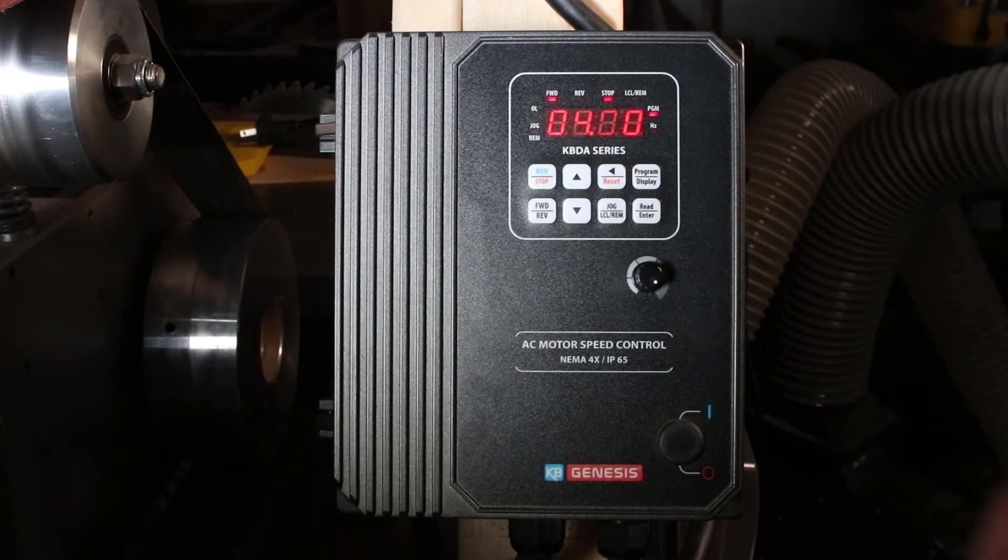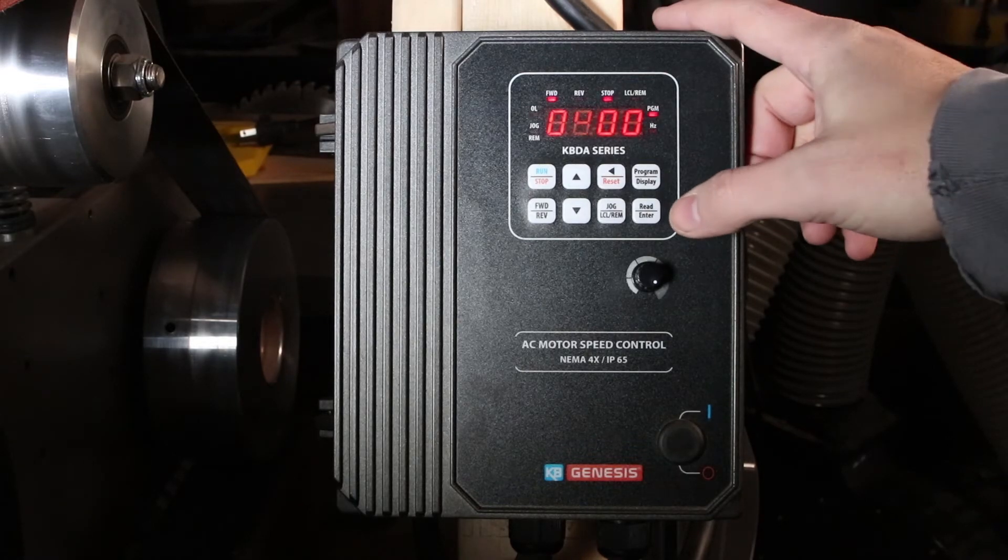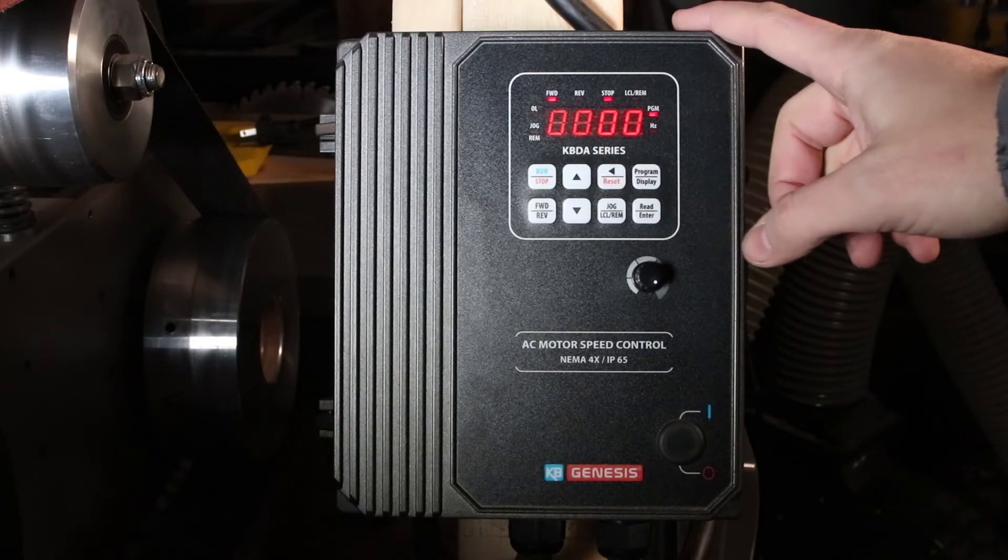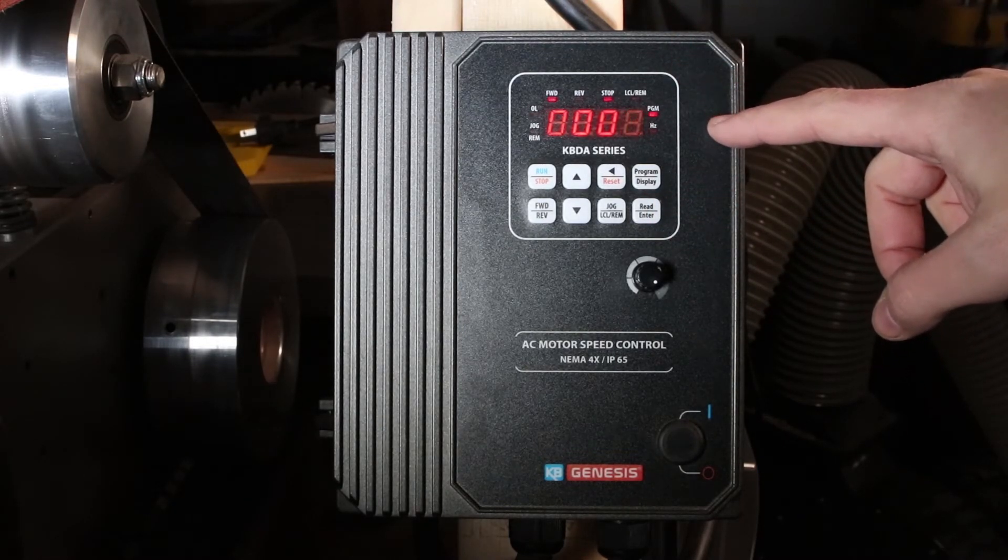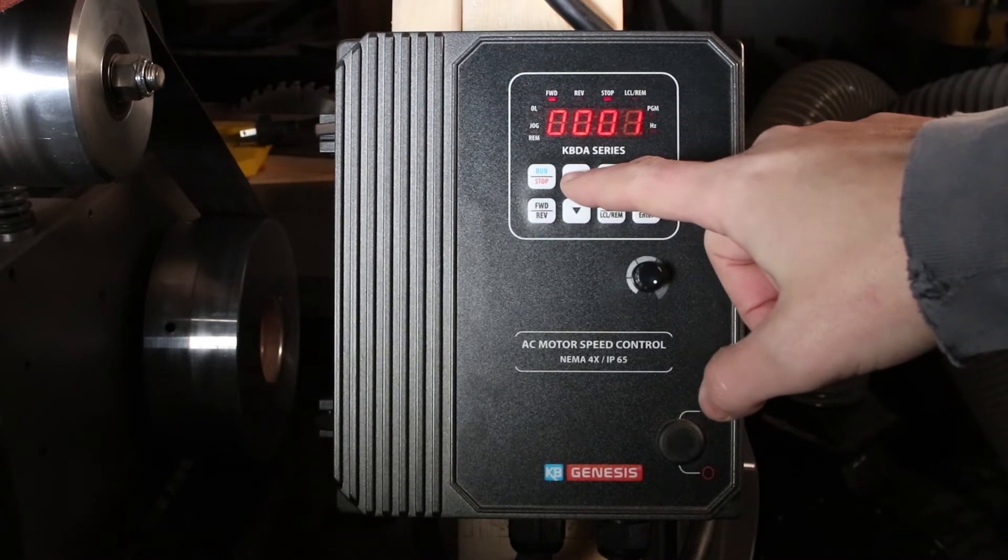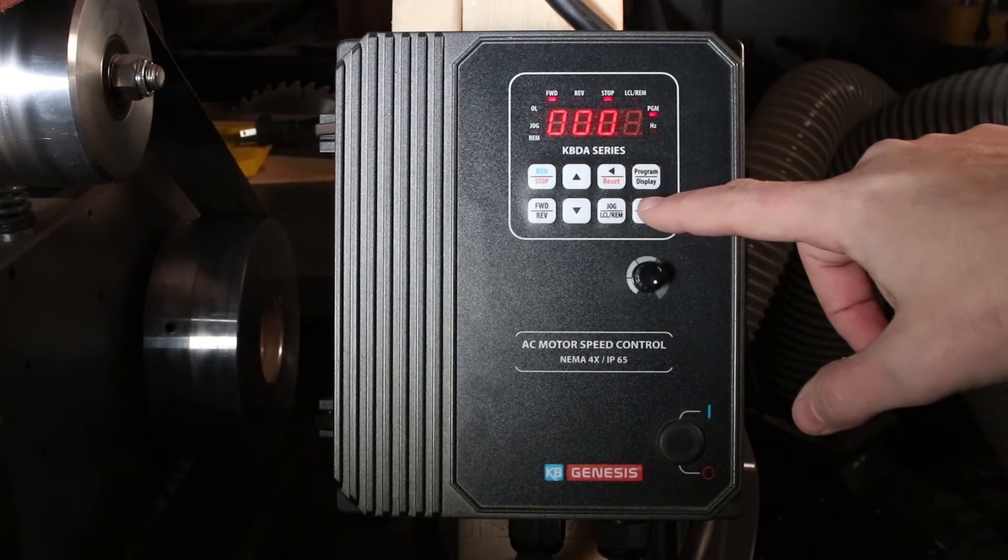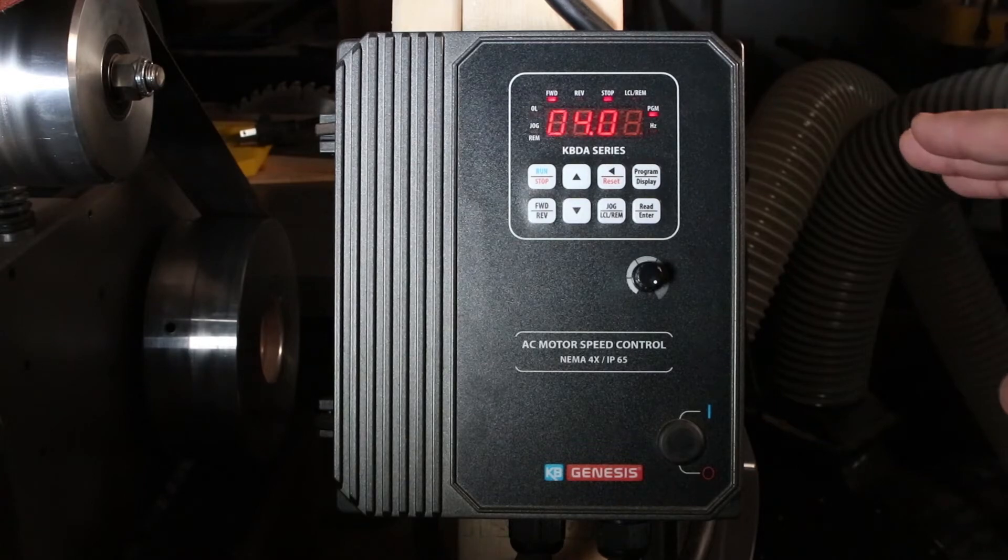What you do is, you go to program, and option 400 is what you are first looking for. That allows you to change, or tells the VFD that you are trying to use a custom measuring unit. You go into option 400, and the default is 00, which is set for frequency. What we're looking for is a custom unit, which is number 2. You set it to 2, hit enter, and now option 400 is set for custom unit.